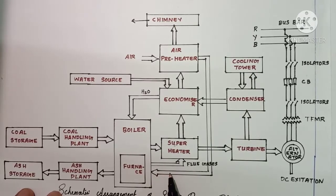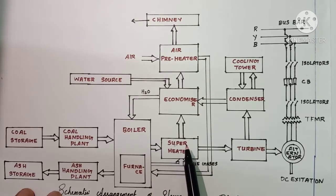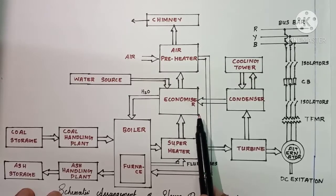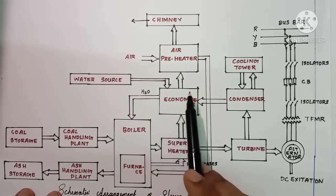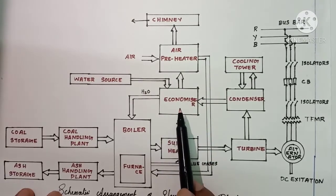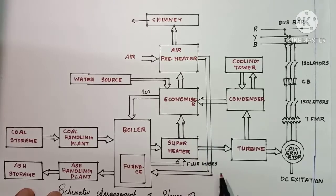During combustion, smoke and flue gases are formed. These flow through the superheaters and economizers. The economizers are the regions which improve or increase the energy of the water.